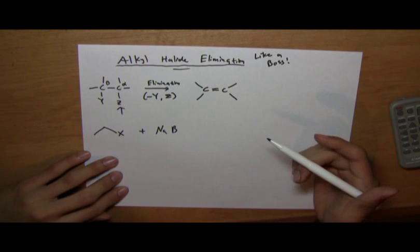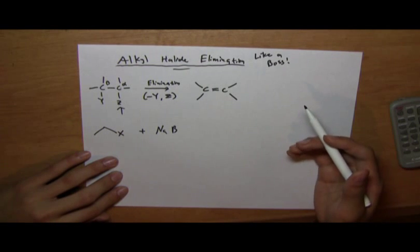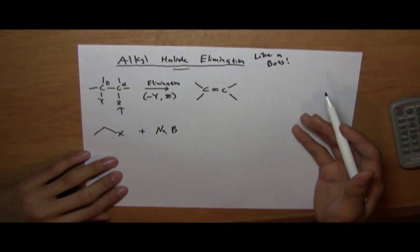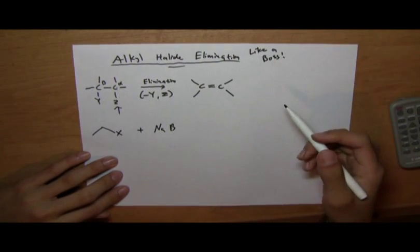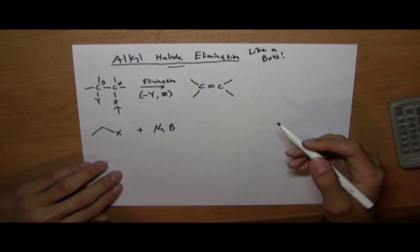For explicit differences between the two, see the video called Differences Between Substitution and Elimination Reactions. There are two basic types of elimination involving alkyl halides. These are called E1 and E2.